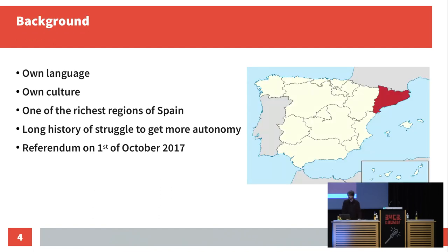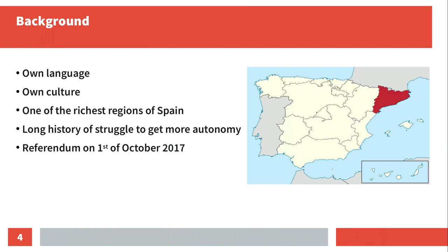Here on the right-hand side you can see the Spanish state, and the red part is Catalonia, which includes the well-known city Barcelona. Catalonia has its own language and culture. It's one of the richest regions in Spain, with 20% of the GDP, and it has a long history of struggle to get more autonomy. Especially in 2010, the autonomy got cut down by the Spanish government, and so voices came up asking for independence.